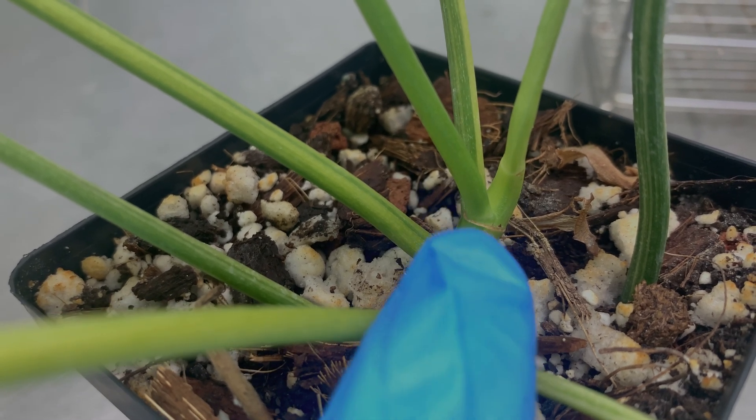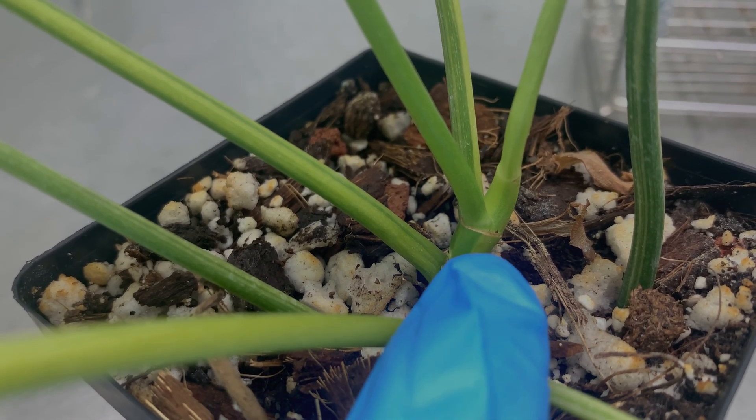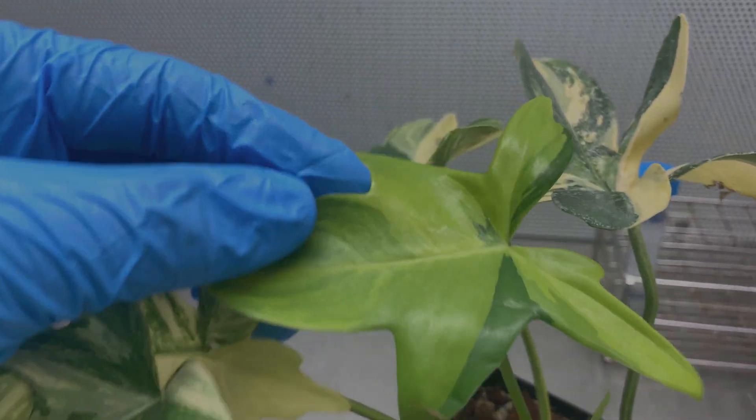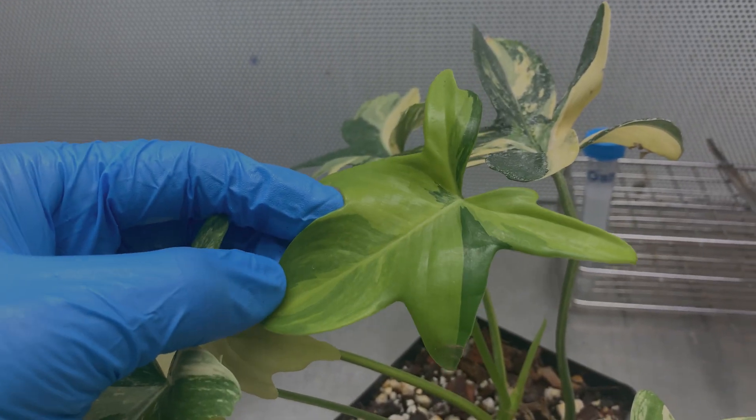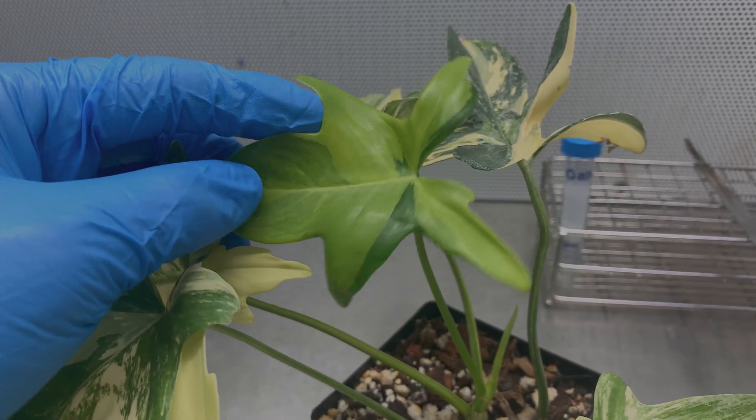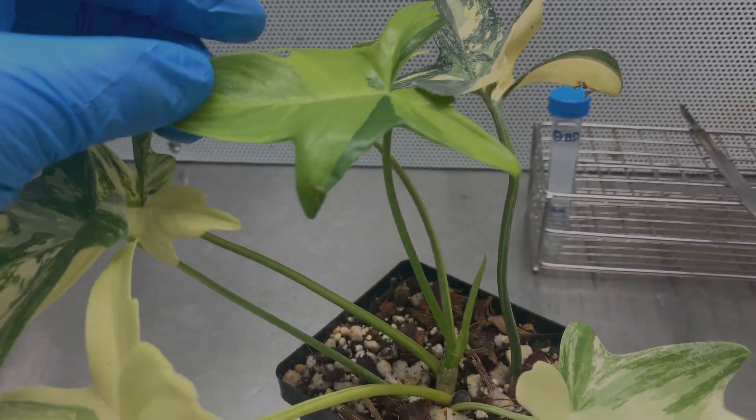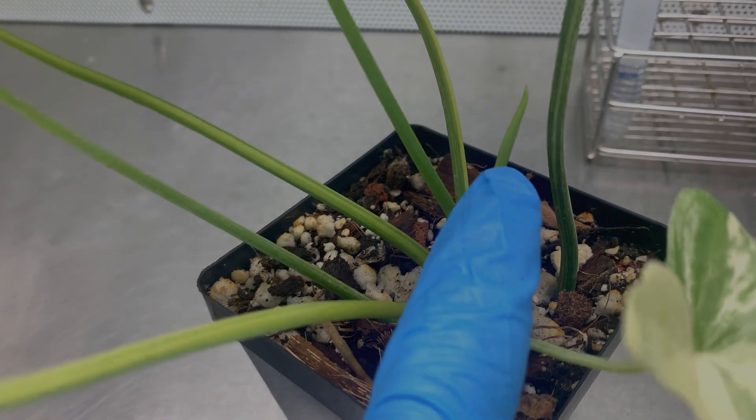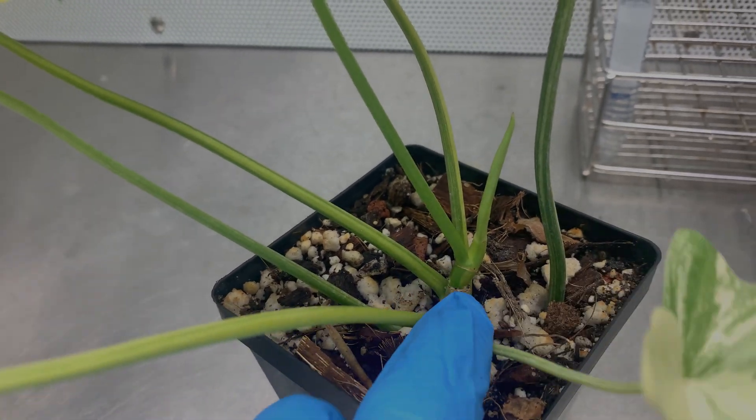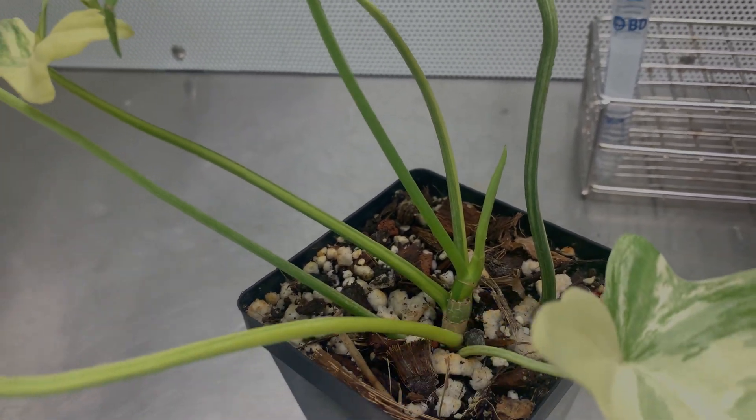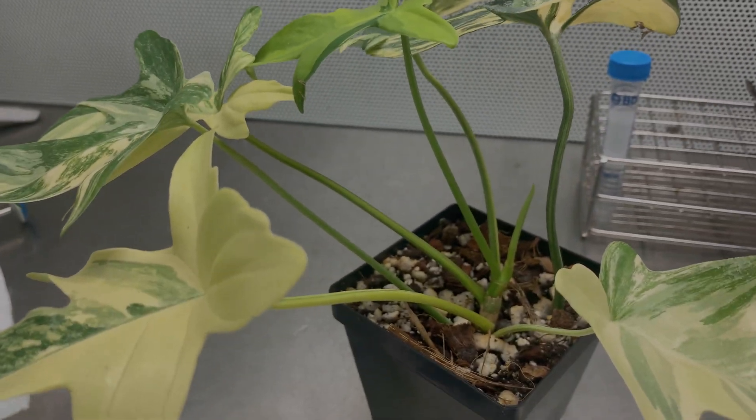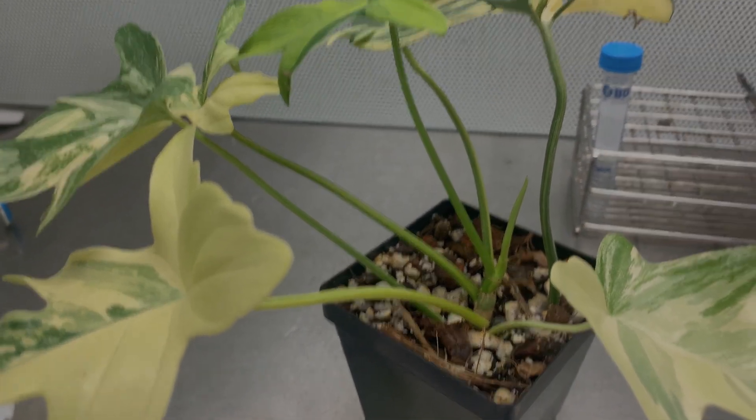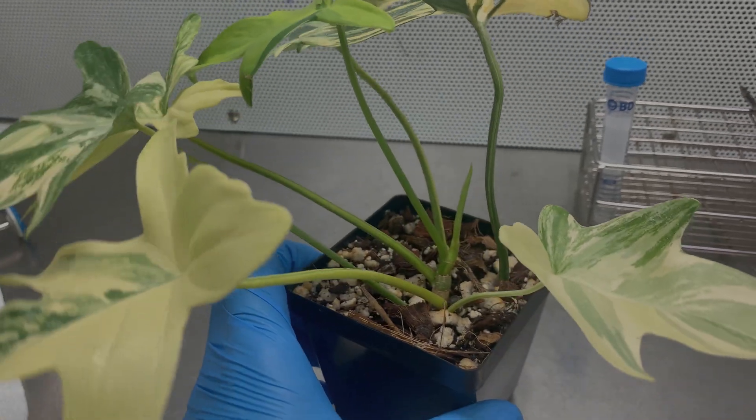So what I want to do is cut right here. This is the new leaf which is a really nice pink. Unfortunately I have to sacrifice it. I'm going to cut this part and this part, and this is going to be my culture. I want to leave the rest of the plant. I don't want to take as much material. I think that's enough for me to place this plant in tissue culture.